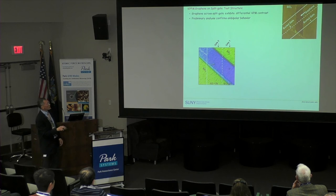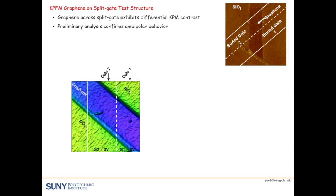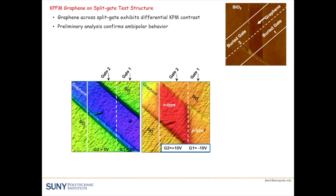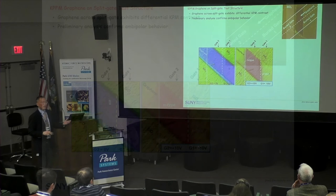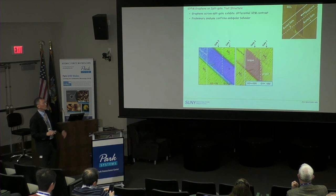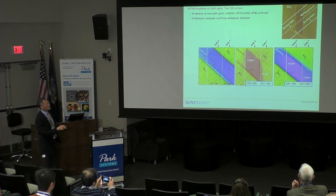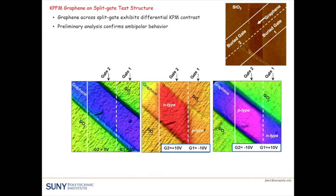Turning the image 45 degrees and applying voltage on the gates, we perform surface potential imaging. With both gates at zero, the graphene potential is fairly uniform. Applying ±10V forms a PN junction — or NP junction depending on polarity — and you can see a clear built-in voltage. We use that built-in voltage to measure density of states, Fermi energy, and so forth. Because the dopant isn't fixed, we can switch the bias to change polarity and realize the opposite diode configuration.